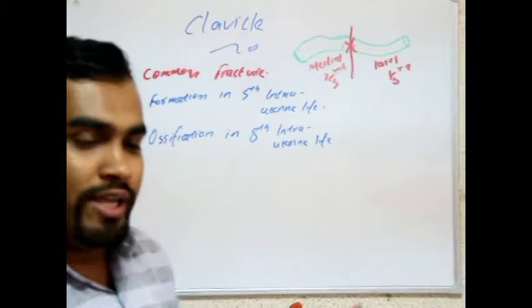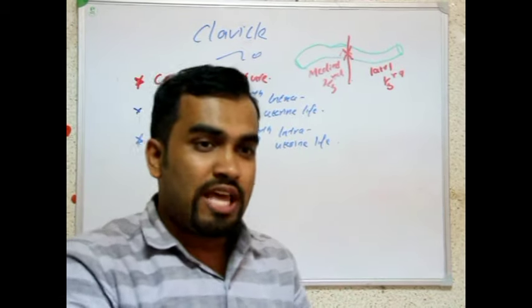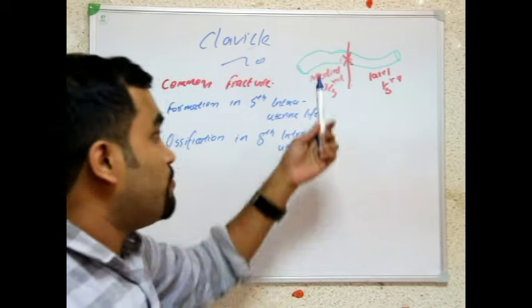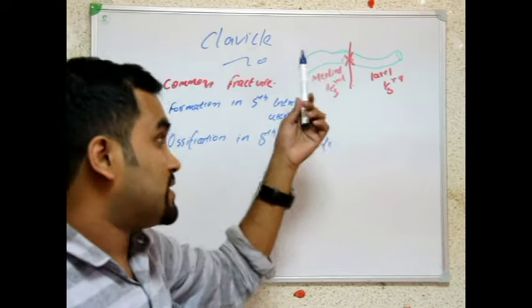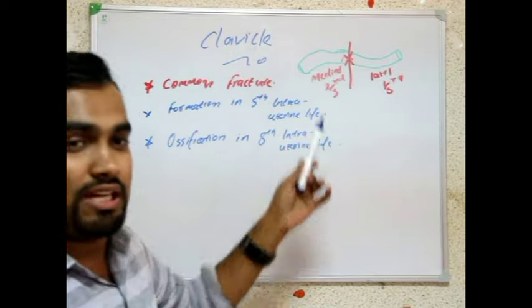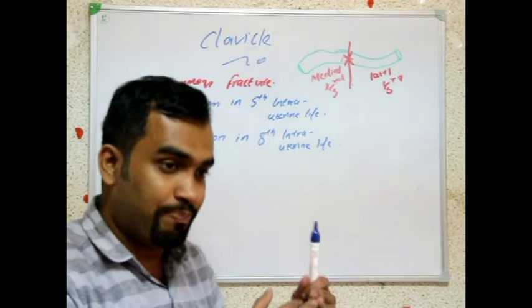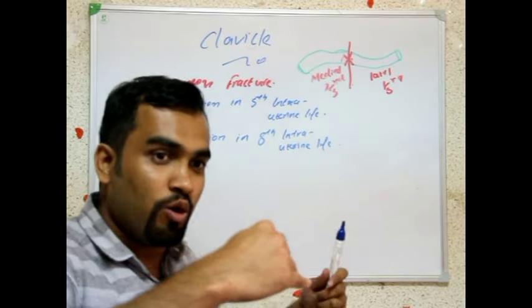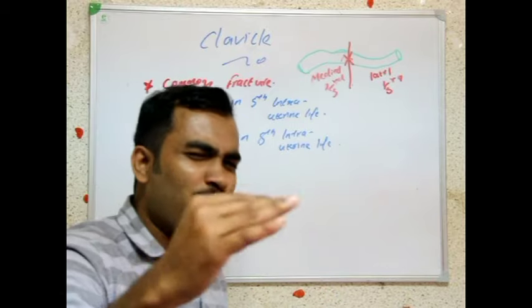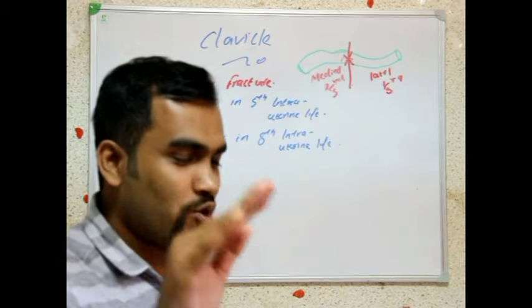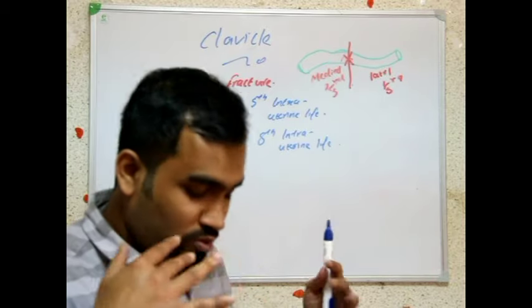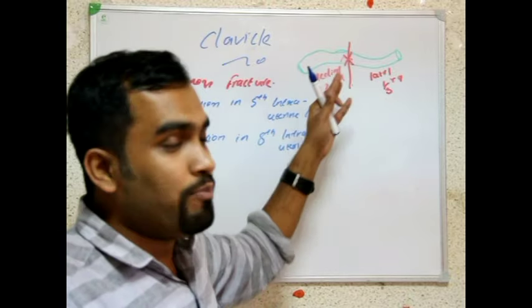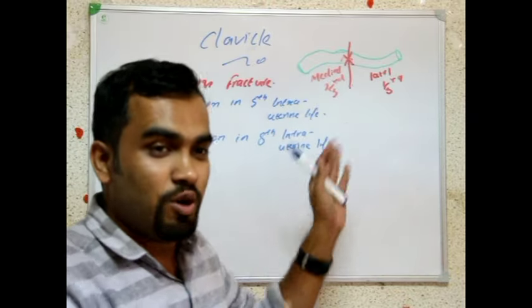In our body, all long bones are placed vertically. Clavicle is the only long bone which is placed horizontally.